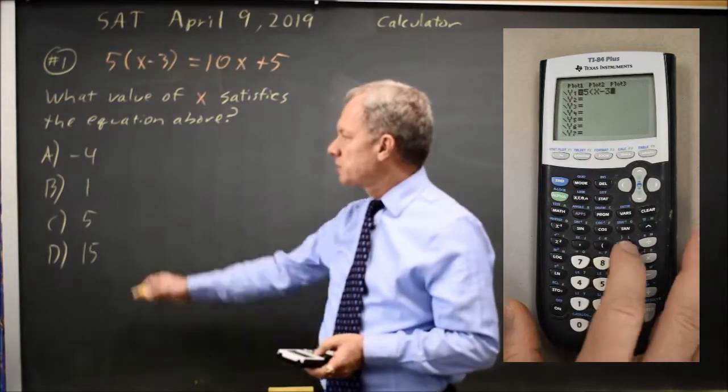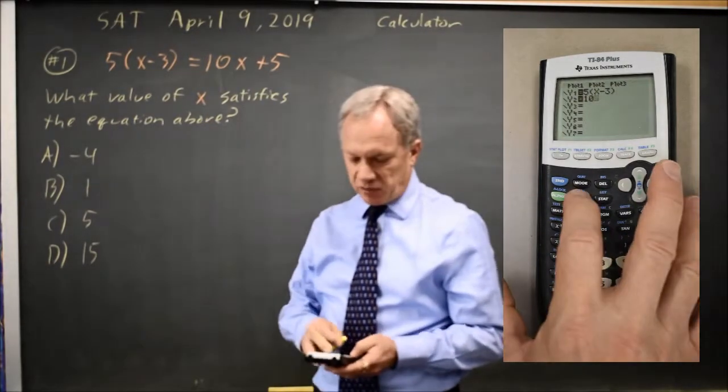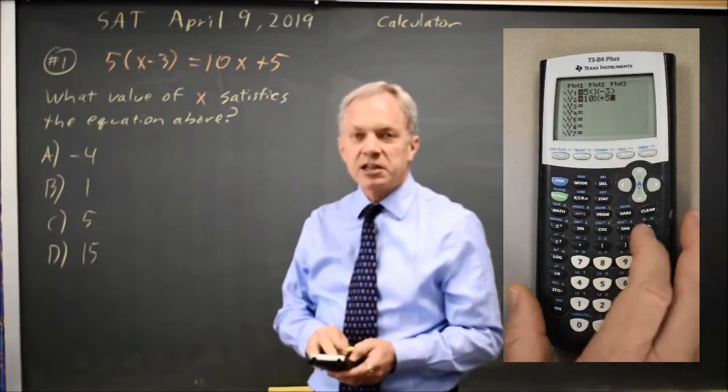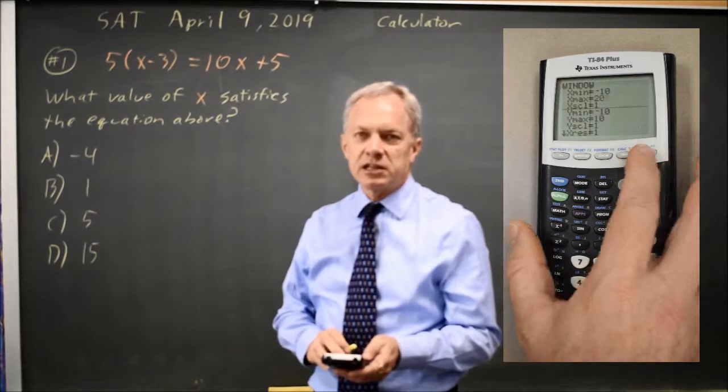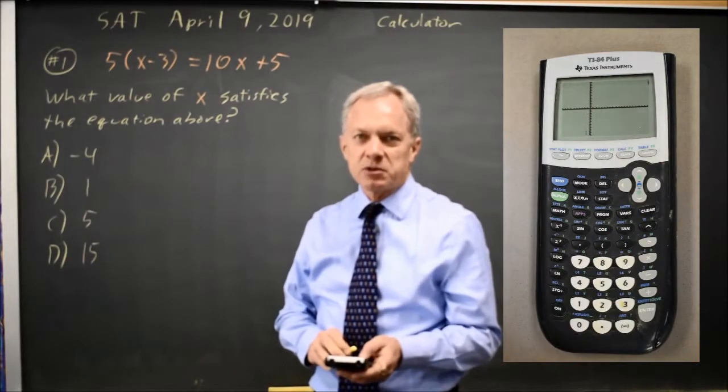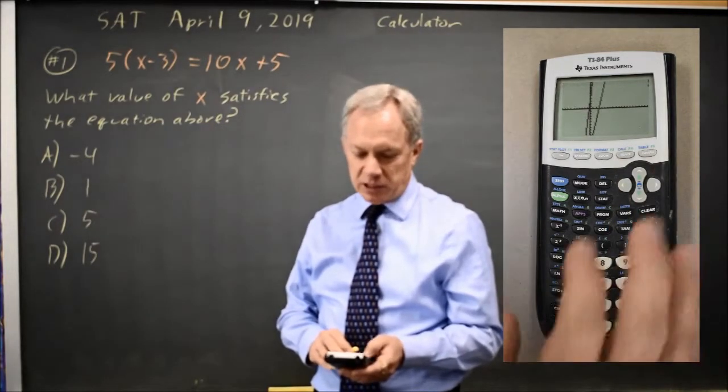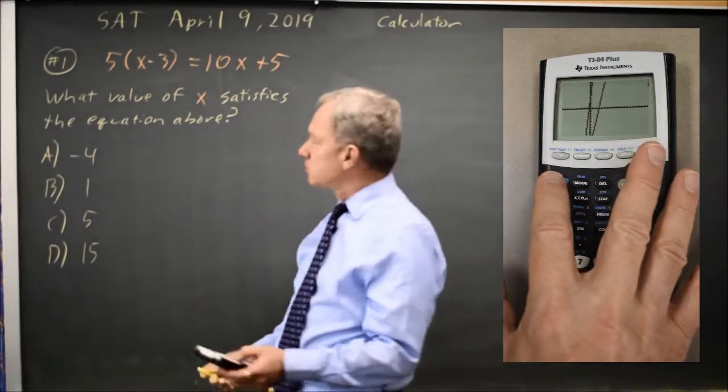Choose an X window that includes all your answer choices, and then find the intersection. On my calculator that's second trace, choice five is intersect, and then I hit enter three times without looking at where I am, and it says X equals negative four.